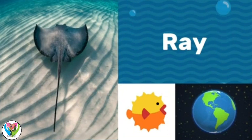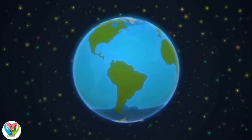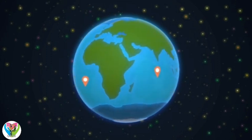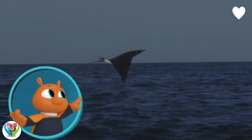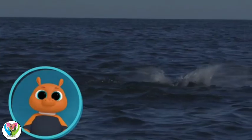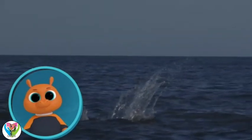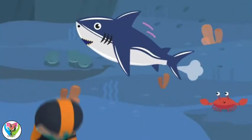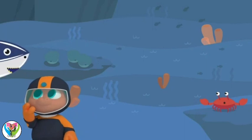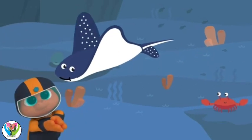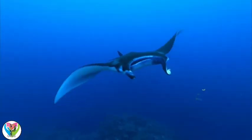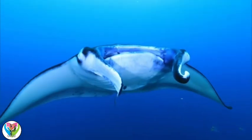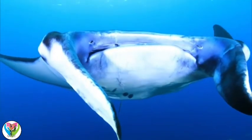Ray! Rays are mostly found in warm waters. That animal is flying out of the water! Like sharks, rays have skeletons made of cartilage instead of bones.